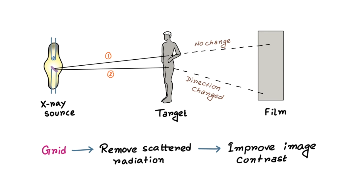Now let's see where it is placed. Here you can see this is the source of radiation, this is the target object and this is film. The grid is actually placed in between the target object and the film.